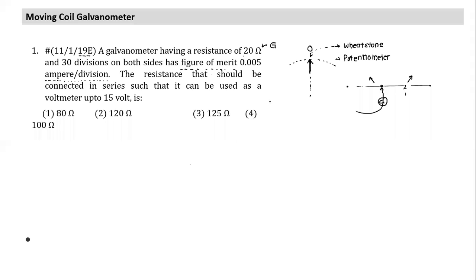To find IG — the maximum current which can be passed through this galvanometer — we multiply figure of merit by number of divisions: IG = 0.005 × 30. The galvanometer has 30 divisions on either side, and the current can flow in either direction. The question asks what resistance should be connected in series so that it can work as a voltmeter up to 15 volts.